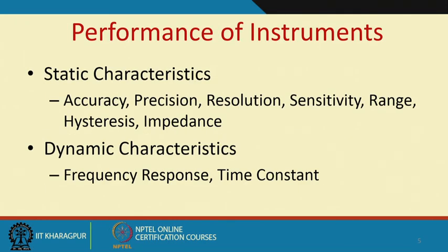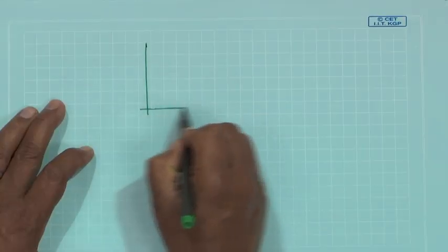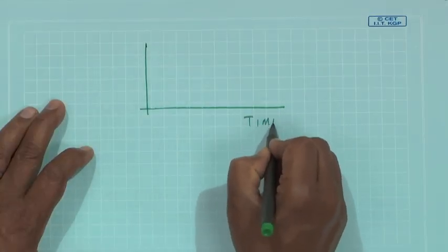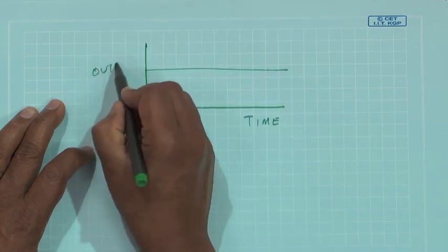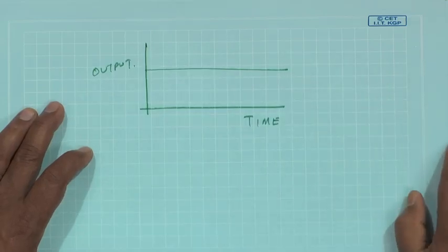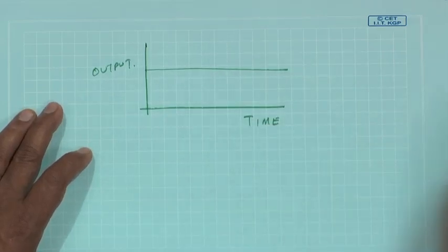Looking at the performance of any measuring instrument or transducer: there are certain static characteristics like accuracy and precision, resolution, sensitivity, range, hysteresis, and impedance.